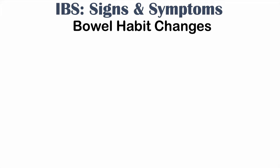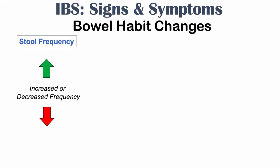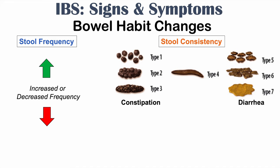Another very important symptom with IBS is bowel habit changes. This is split into two components: stool frequency and stool consistency. Stool frequency can be either increased or decreased bowel movements per day. For stool consistency, we use the Bristol stool chart. Type 4 is the normal consistency. Types 1 to 3 describe more constipated stool — particularly type 1 is seen with IBS. Types 5 to 7 describe diarrhea, with types 6 and 7 being more prominent.